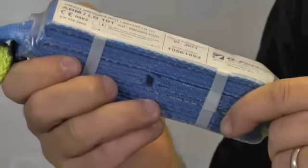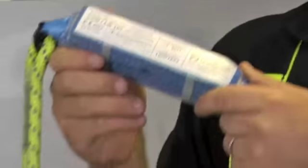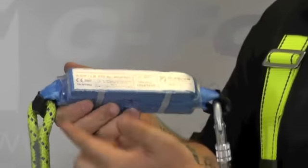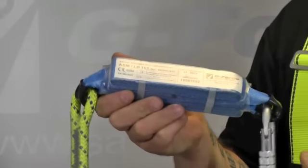The energy absorber is a compact shock absorber which would reduce risk of injury during a fall and it has all the key information about the lanyard.